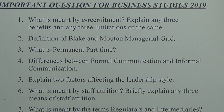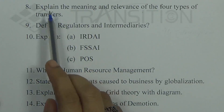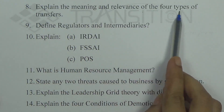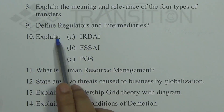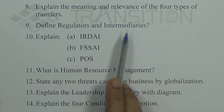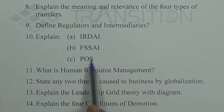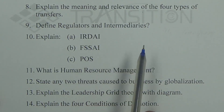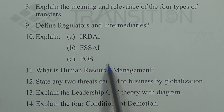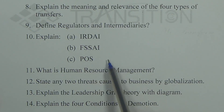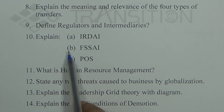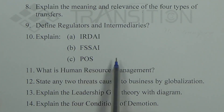Question 7: What is meant by the terms regulators and intermediaries? Question 8: Explain the meaning and relevance of the four types of transfers. Question 9: Define regulators and intermediaries. Question 10: Explain IRDAI, FSSAI, and ICPOS. For abbreviations in short questions, you only need to write the full form; but in long questions, you must write both the full form and explain its meaning.